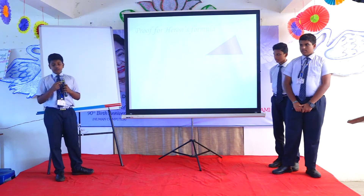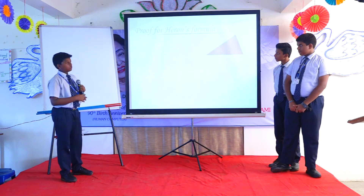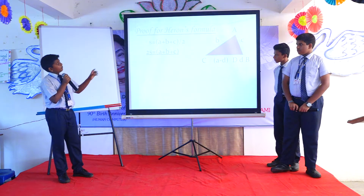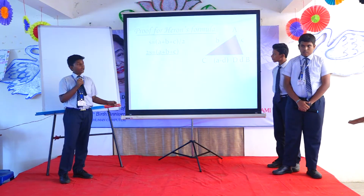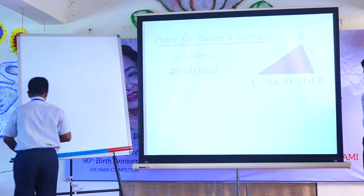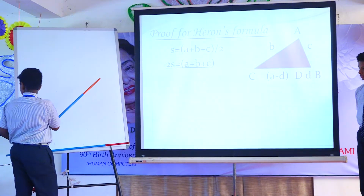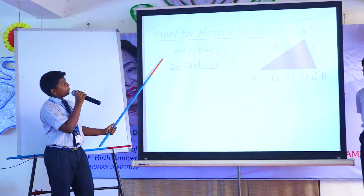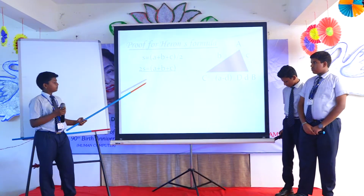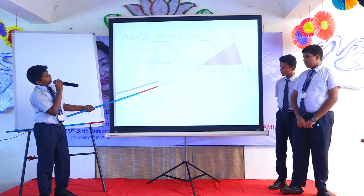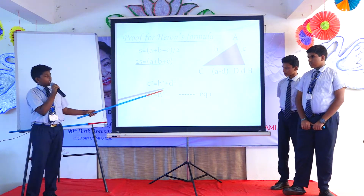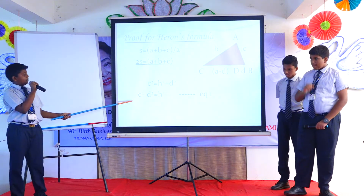Now I am going to talk about the proof of Heron's formula. Take a triangle with vertices A, B, C and sides a, b, c. Side A is divided into segments (A minus D) and D, with height H. From triangle ADB, you get c squared equals H squared plus D squared.